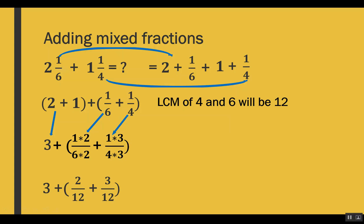After multiplication, our fractions have become 2 out of 12 and 3 out of 12. We've already added our whole numbers to get 3. Now with the same denominator, we just add the numerators: 2 plus 3 equals 5. We can't simplify 5 out of 12 because there is no common factor. Combining 3 and 5 out of 12, we get our final result: 3 and 5 out of 12.